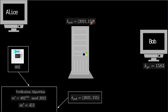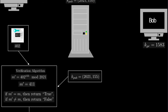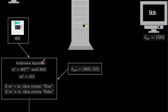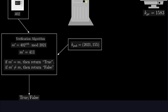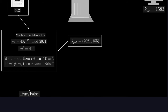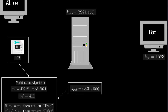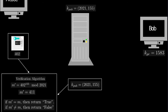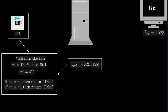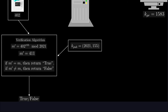Because 402 is a valid signature, that modular exponentiation yields m' = 411, which equals the original message m. The verification algorithm takes the message, the signature, and the public key as inputs, and returns true in this case. Note that anyone can perform this verification, but only Bob — who holds the private key — can produce a valid signature.